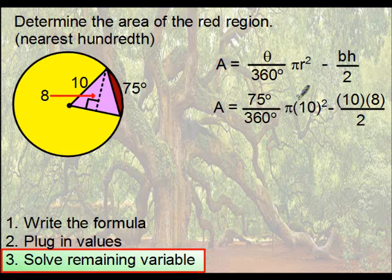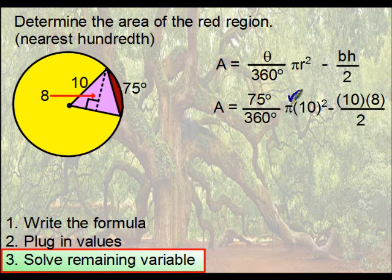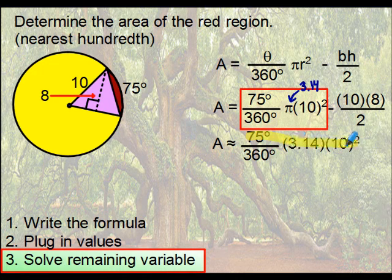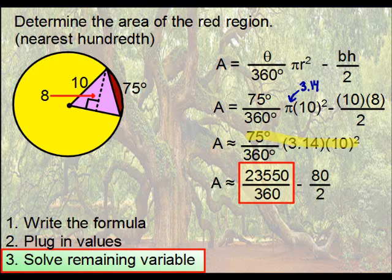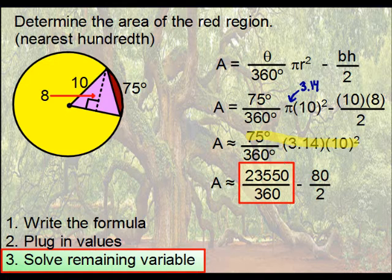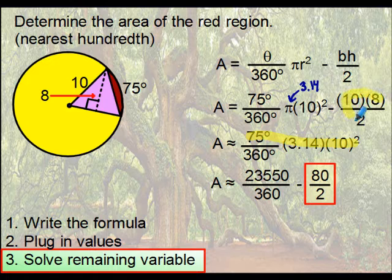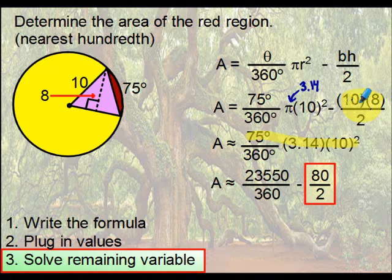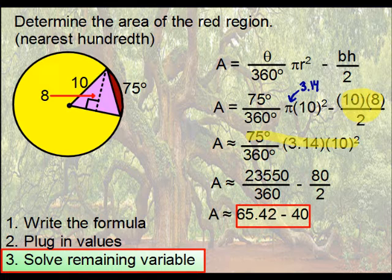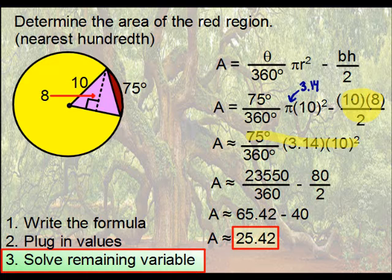Because we're rounding to the nearest hundredth, we're going to replace pi with 3.14. That's what we're looking at there. We'll simply multiply across the top - that's 23,550. And again, the degree symbols reduce out. 80 over 2 is the result of this part here. Take 10 times 8 essentially and you get 80. So when you divide that, you're going to get 40. So that's 65.42 minus 40, and subtract those to get your answer.